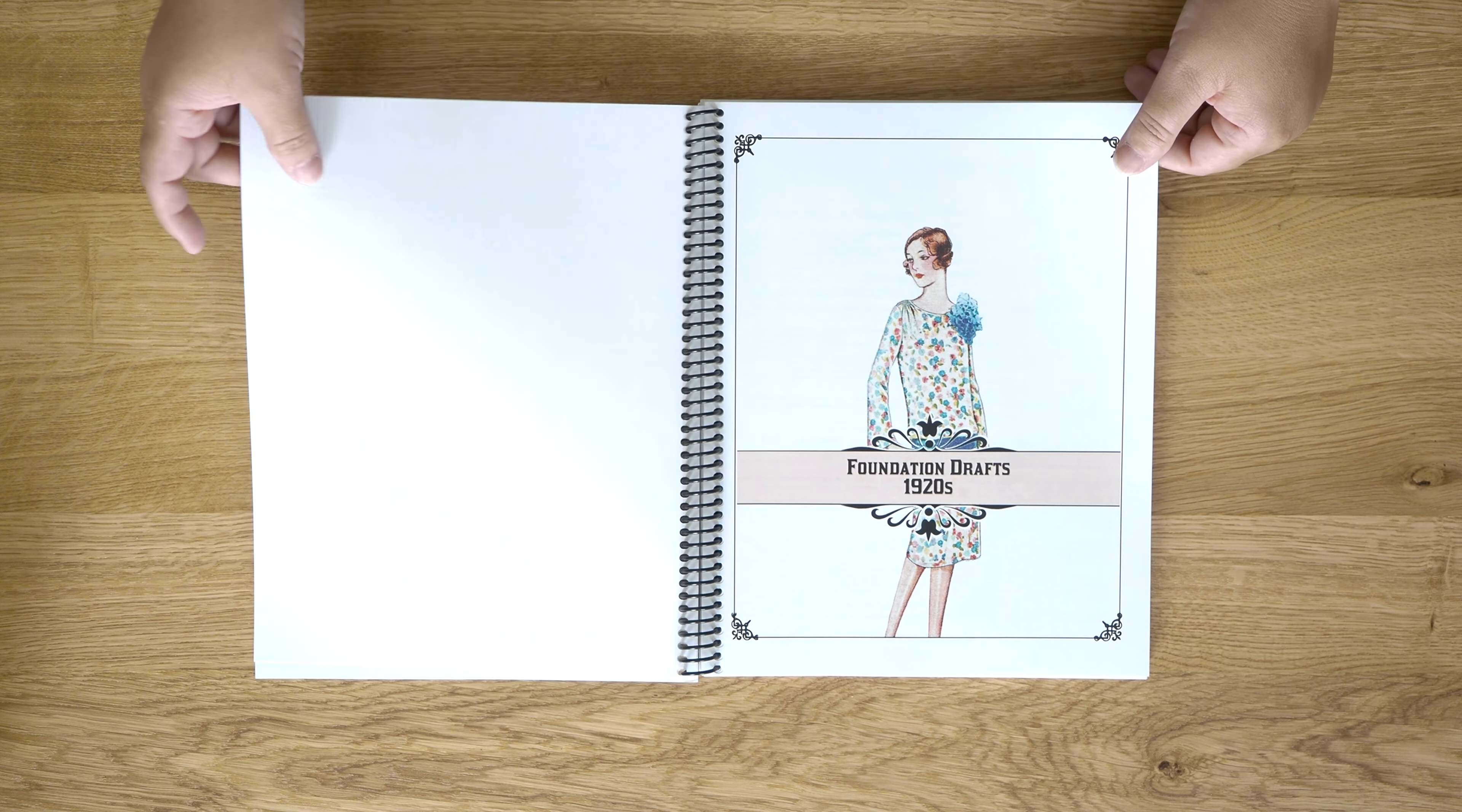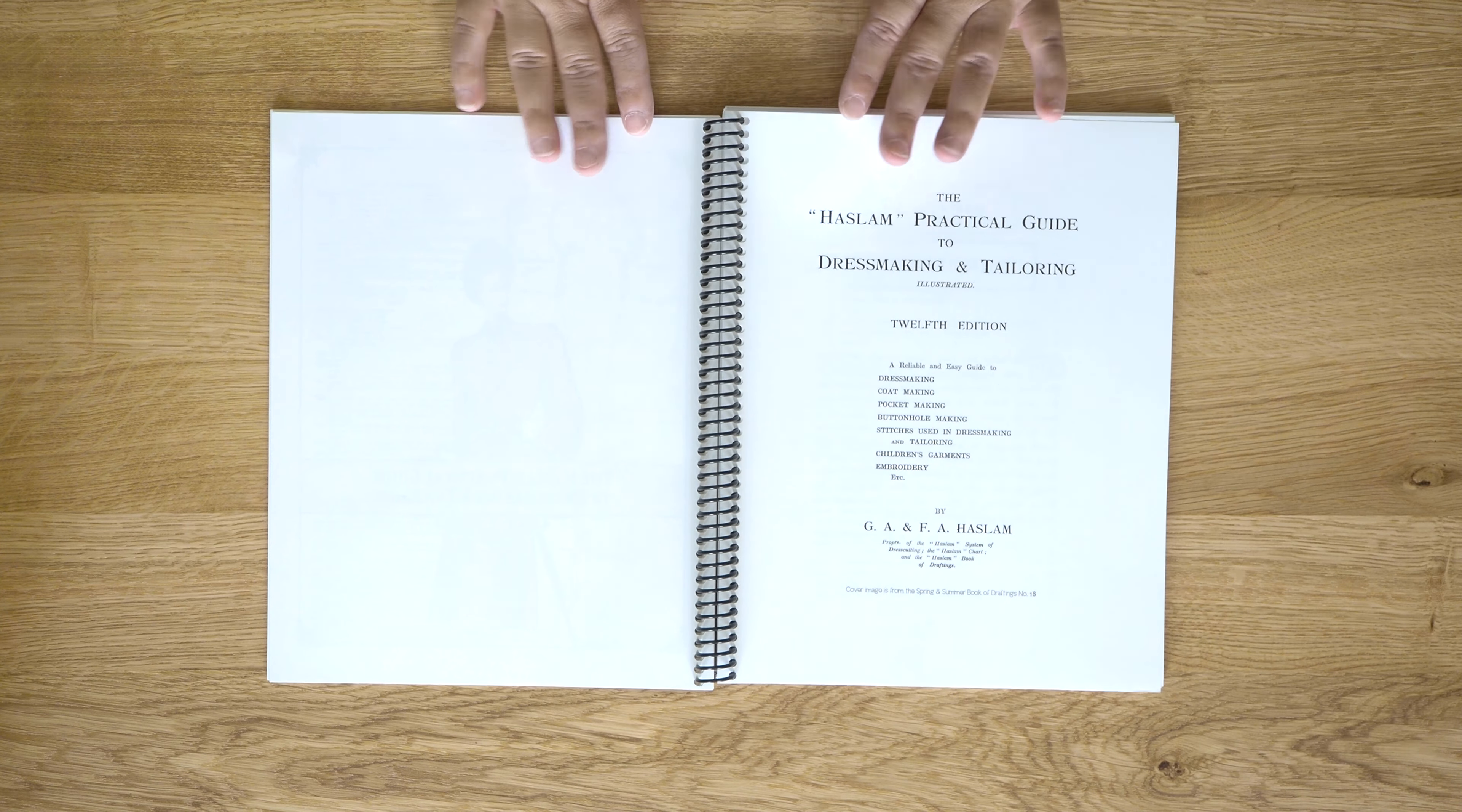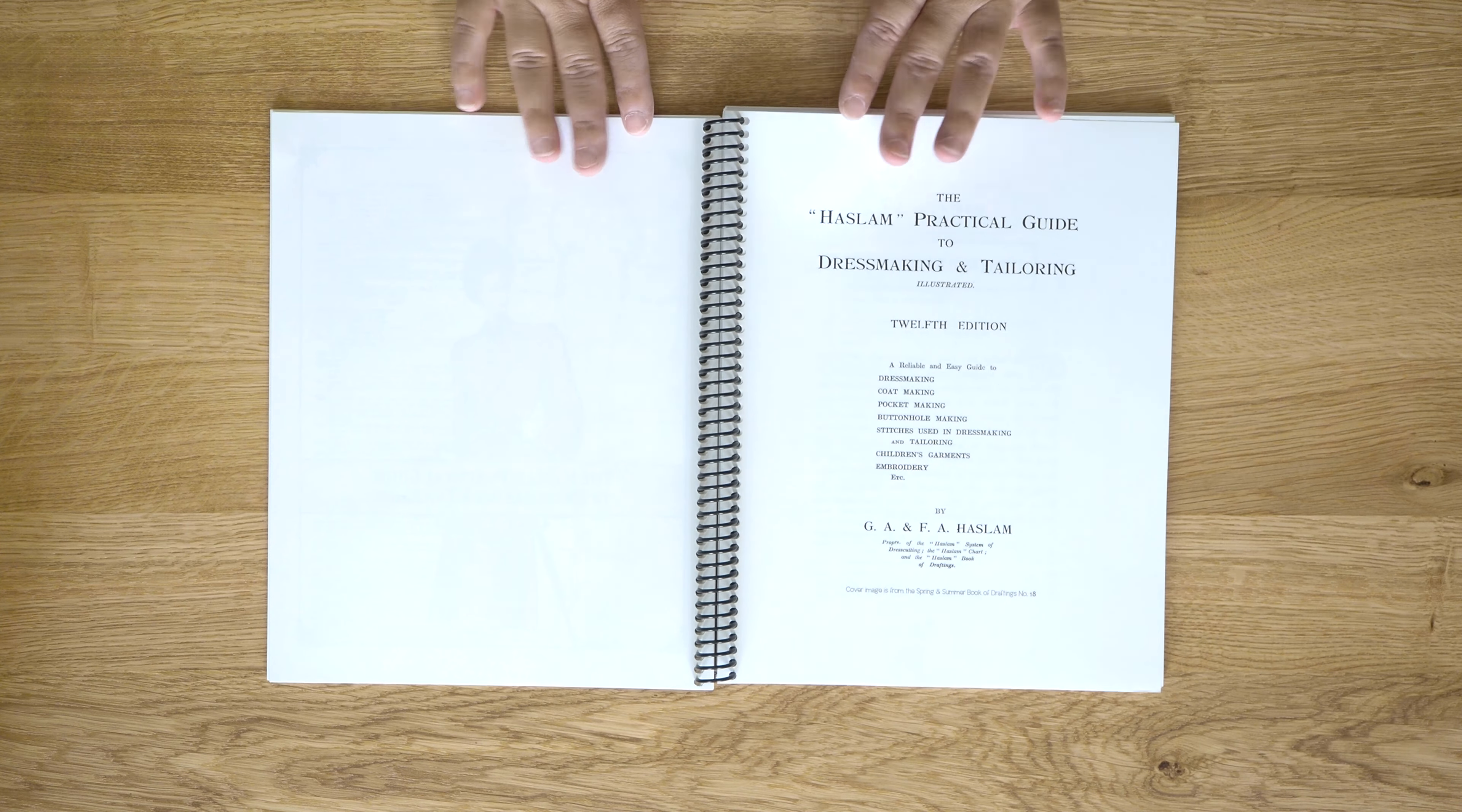The foundation patterns that Mrs. DePue gives us are from 1920 to 1960, and each decade more or less has its own foundation pattern because as you can imagine the silhouettes change and so the foundations have to change. She also gives us the charts. This is a chart that you use to draft everything once you have taken your measurements. This compilation by Mrs. DePue also gives us the Haslam sewing guide, so that if you are not terribly familiar with how to sew, you'll have here the vintage techniques that the Haslam system itself suggested.